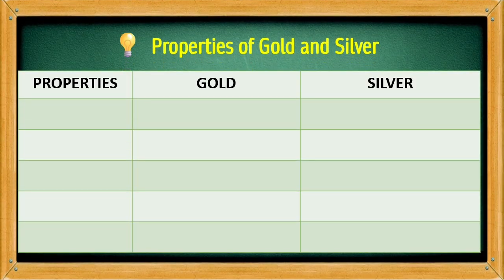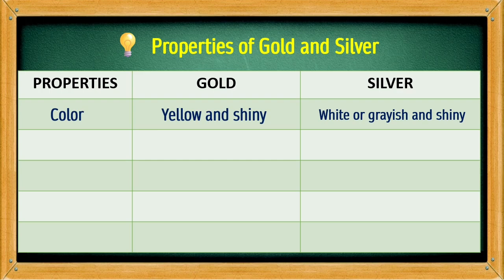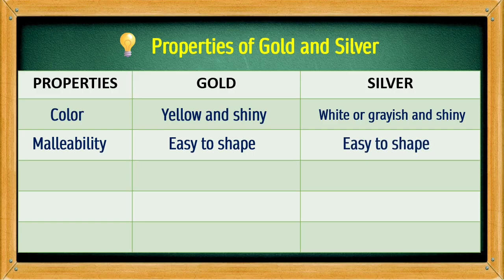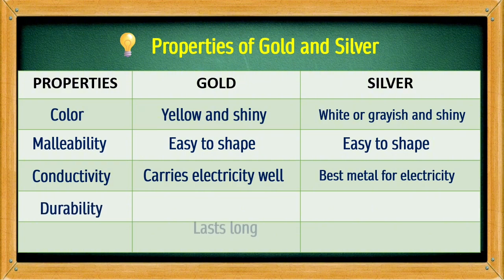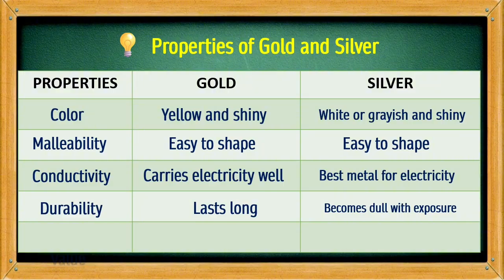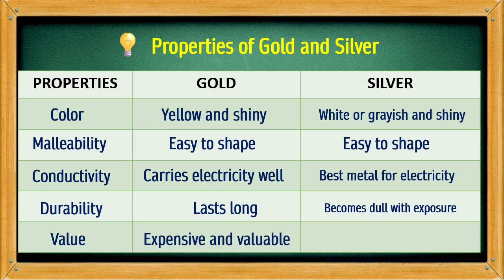Properties of Gold and Silver: Color — gold is yellow and shiny; silver is white or grayish and shiny. Malleability — gold is easy to shape; silver is also easy to shape. Conductivity — gold carries electricity well; silver is the best metal for electricity. Durability — gold lasts long; silver becomes dull with exposure. Value — gold is expensive and valuable; silver is also valuable but cheaper than gold.